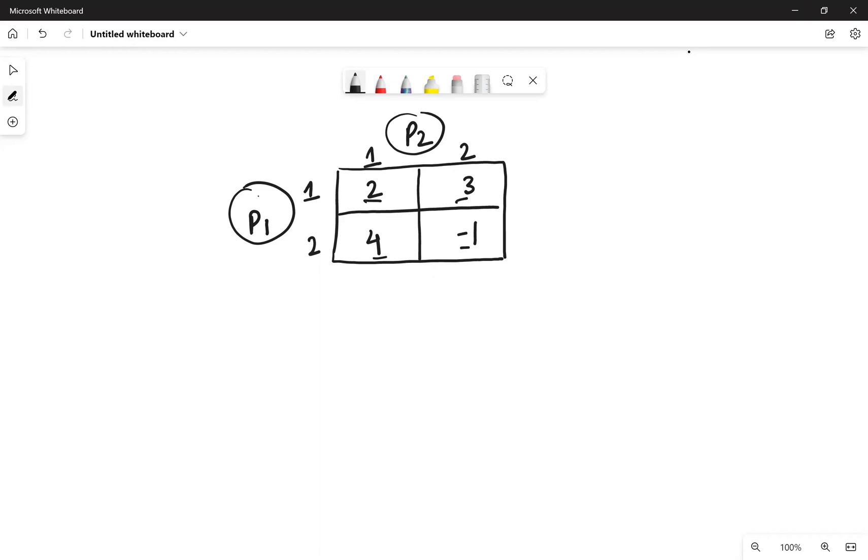So to find the value of the game, you just need to adopt a simple formula. The value of the game is equal to AD minus BC divided by A minus B minus C plus D.